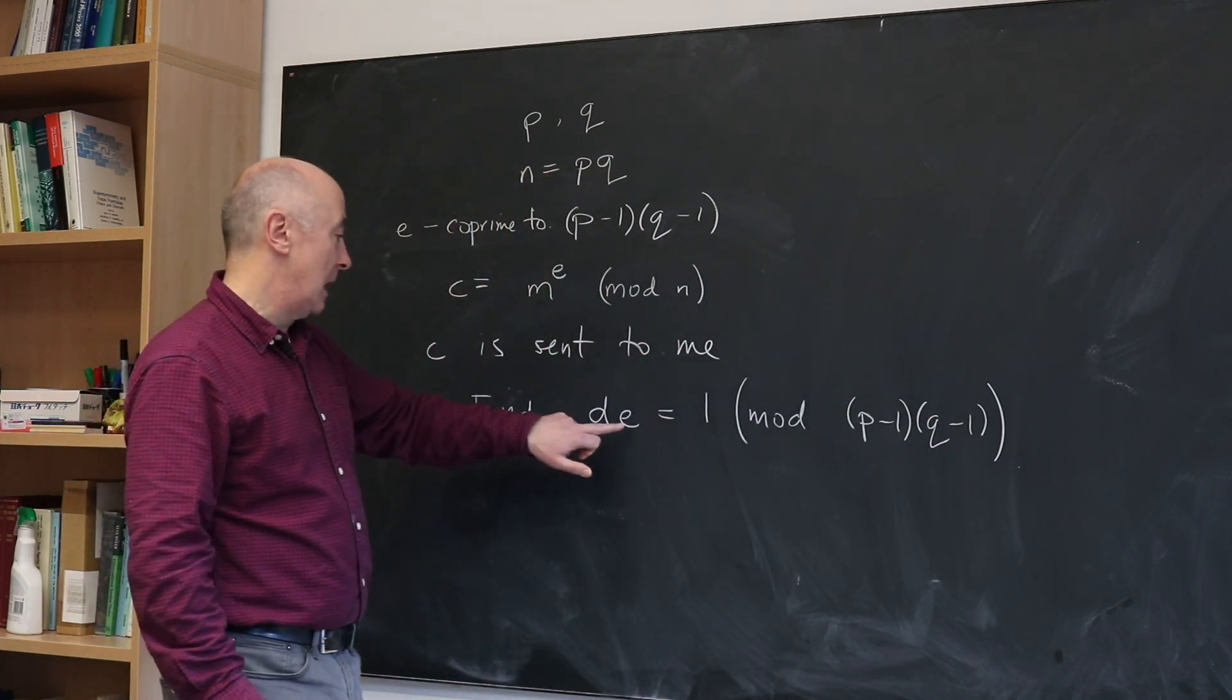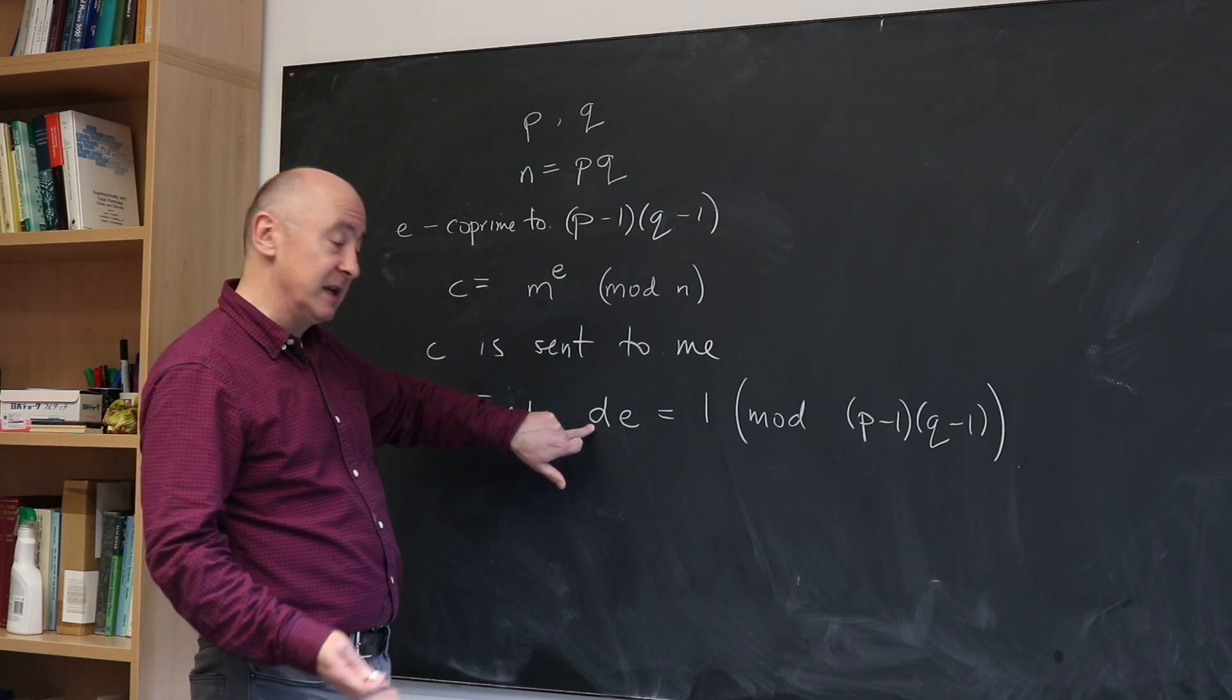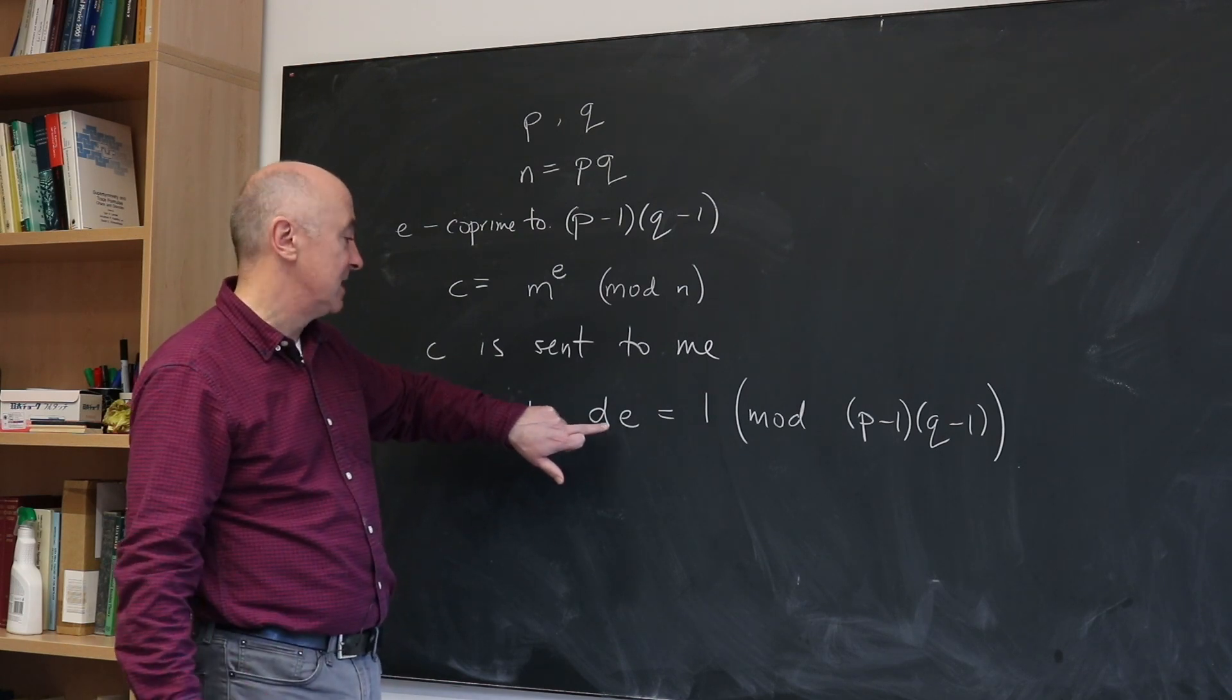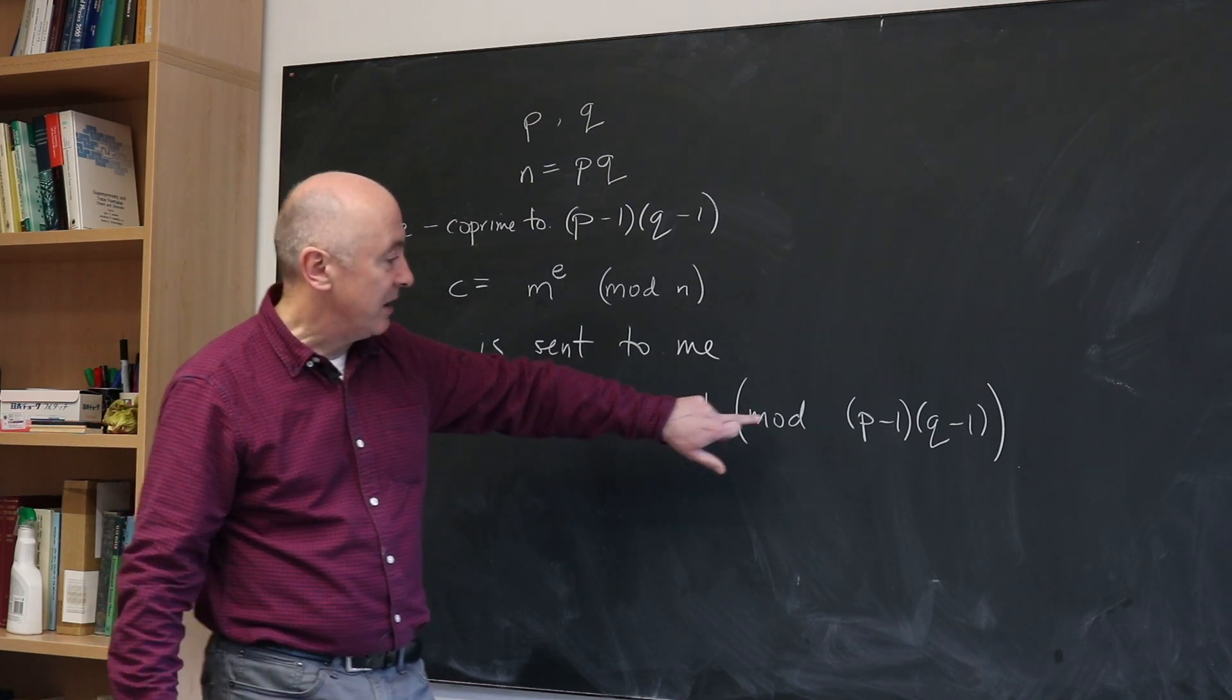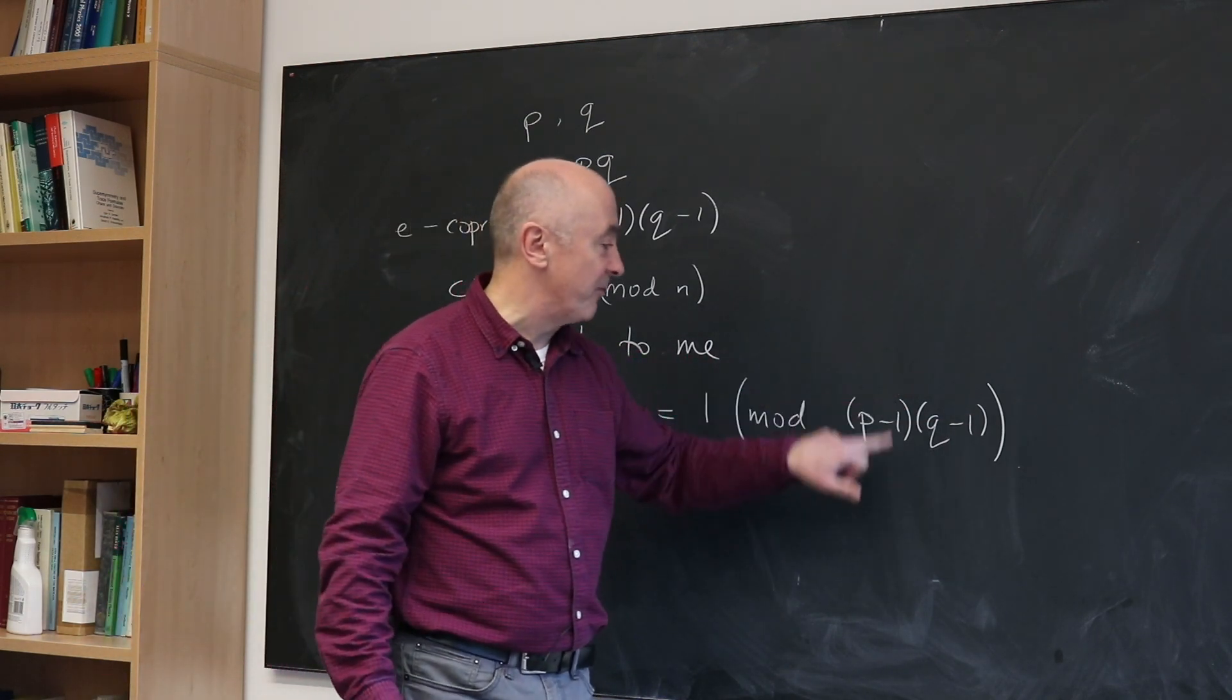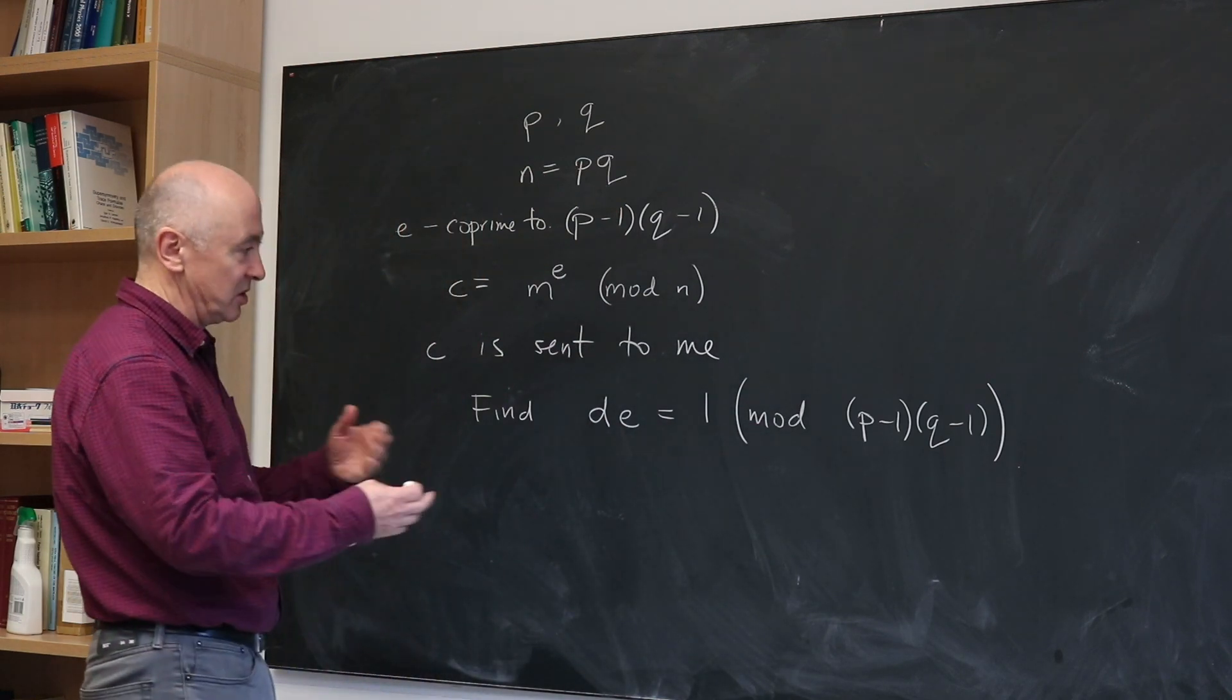The computation I can do such that D times E is equal to one modulo the number P minus one times Q minus one. So I know my E and I have to find a number D, and one always exists such that when I multiply E by D I get one if I subtract off multiples of P minus one times Q minus one.